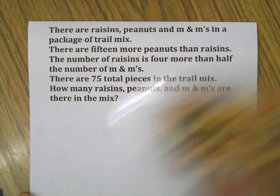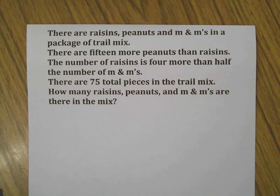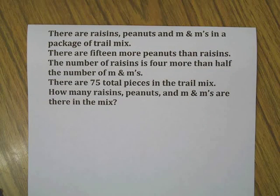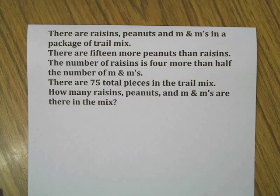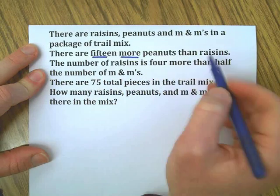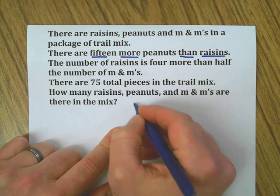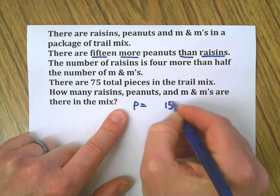So we've got some trail mix that has raisins, peanuts, and M&Ms, and here are the relationships between the things. We've got 15 more peanuts than raisins. Let's go ahead and write that down. One strategy for solving big problems like this with lots of words in them is to break them into small pieces.